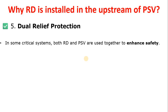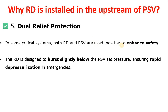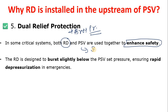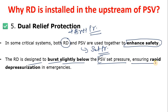Using both an RD and a PSV also provides dual relief protection. Since both are relief systems, using them together enhances safety. The RD is designed to burst at or slightly below the PSV set pressure, so that when the RD bursts you are alerted and the PSV can then open due to the pressure build-up. This ensures rapid depressurization in emergencies.